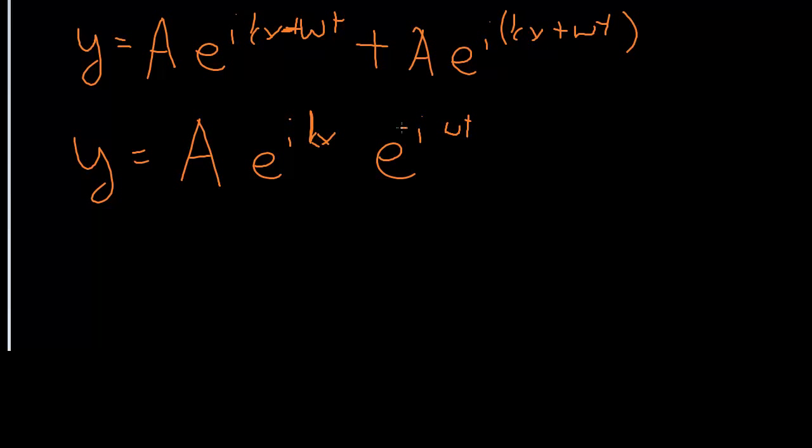Which then of course as you recognize cosine theta is (e^(iθ) + e^(-iθ))/2, so this must be 2A cos(ωt) times e^(ikx).